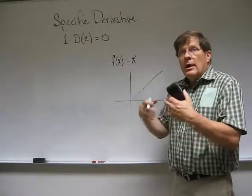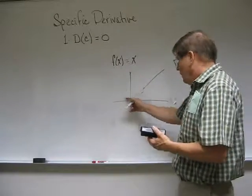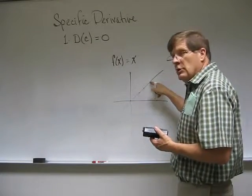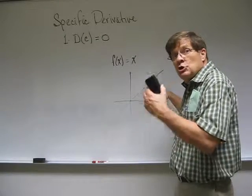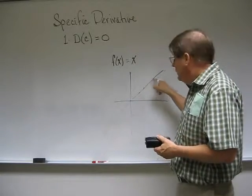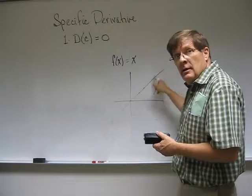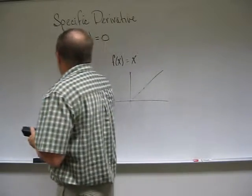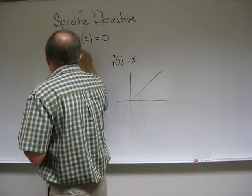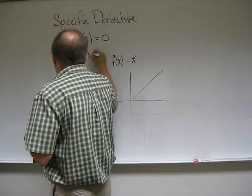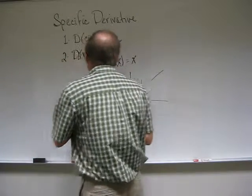Notice again, no matter which x we pick, no matter what x we pick, you look at the point on the curve there, and the slope of the curve at that point is going to be, that's right, 1. Rule number 2, the derivative of the function x is equal to 1.